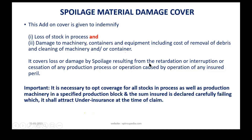The coverage applies provided the operation stoppage or cessation has taken place due to operation of any insured peril — this word is very important. It can be due to failure of electricity or any other reason. For example, in the case of an earthquake, if the tremor intensity is high, the entire plant and machinery will be stopped and the process will have to be ceased, and in that case the spoilage of chemicals inside the reactors will be payable.